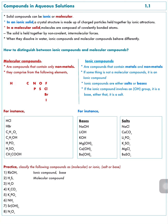HBr is also a molecular compound because H and Br — both elements — are among these 10 elements. Ethanol, C2H5OH, is also a molecular compound because its composition is carbon, hydrogen, and oxygen, and all three of those elements are present in the table.